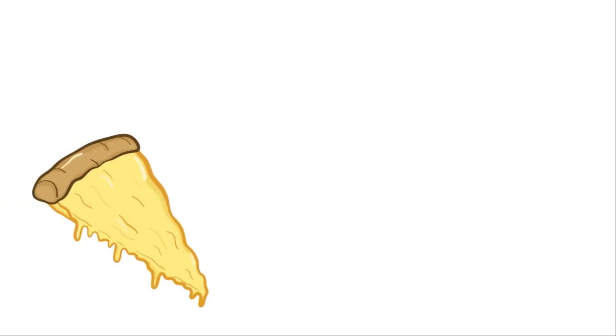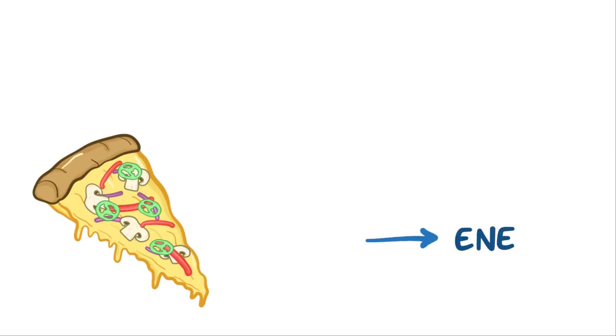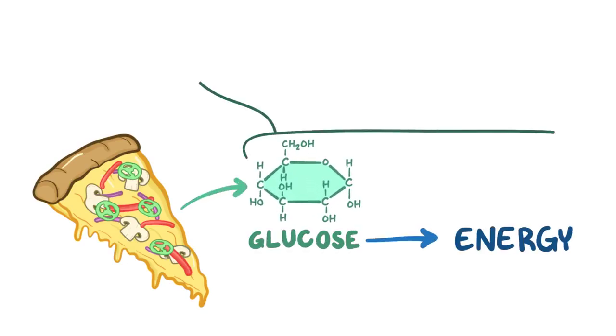Let's say that you just ate a big slice of pizza with onions, mushrooms, bell peppers, and jalapenos. To pull energy out of the glucose in that pizza, or really any food, requires glycolysis.